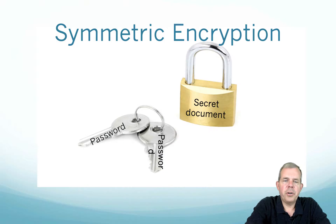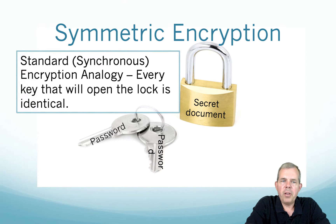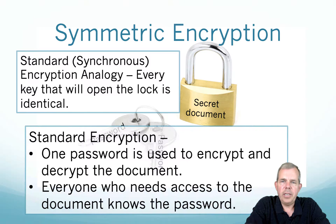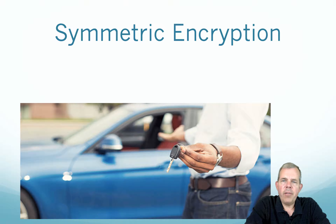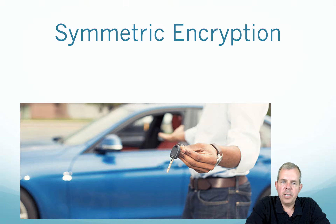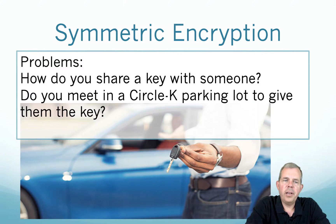So how does it work? Symmetric encryption uses a single key for a secret document — standard encryption where every lock is identical and the keys that go with it, so one password is all you ever need. However, there are problems with symmetric encryption. Let's say you have a document — how do you share it with the person that wants to get in? Well, you have to give them the key. You could arrange to meet them in a parking lot and hand the key over, but that's one way.